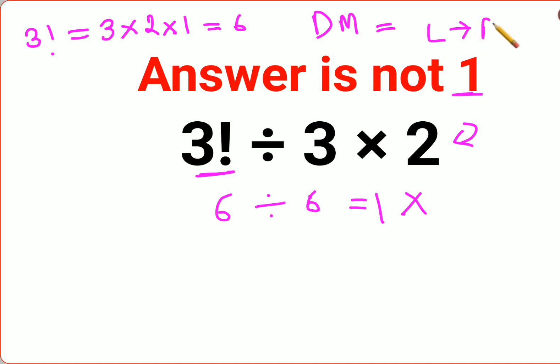So here, the question becomes 3 factorial, which is 6, divided by 3 × 2. As I said, first we will do the first operation from your left-hand side, which is 6 divided by 3.